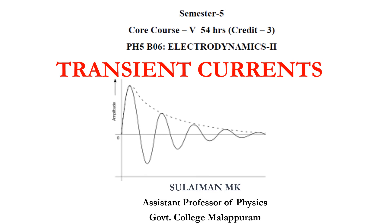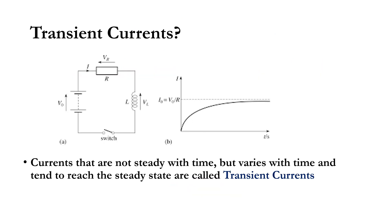Good morning everyone. Welcome back to the third module of electrodynamics: transient currents. Transient currents are currents that are not steady with time but vary with time, and tend to reach the steady state.